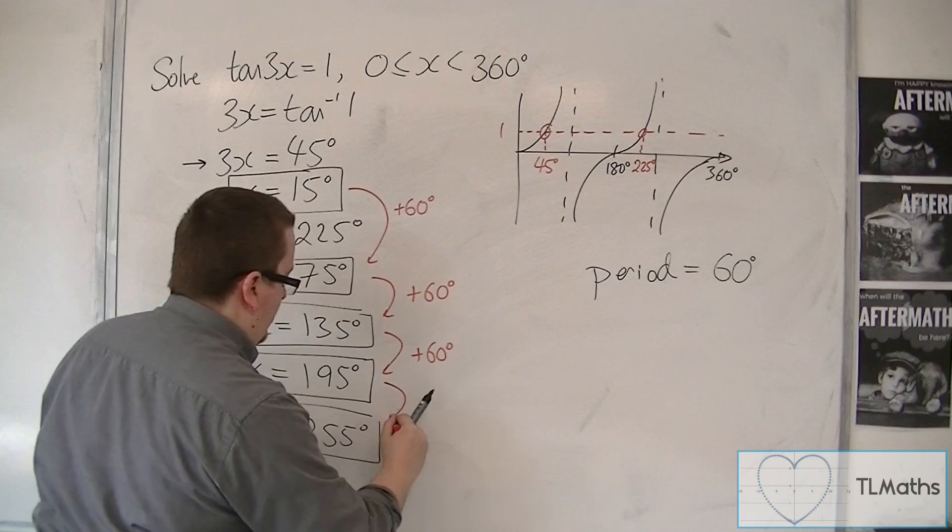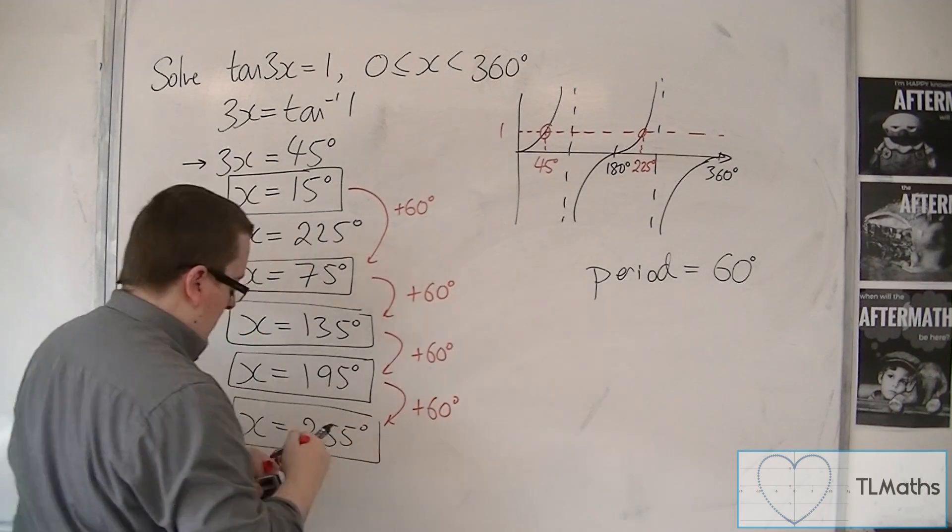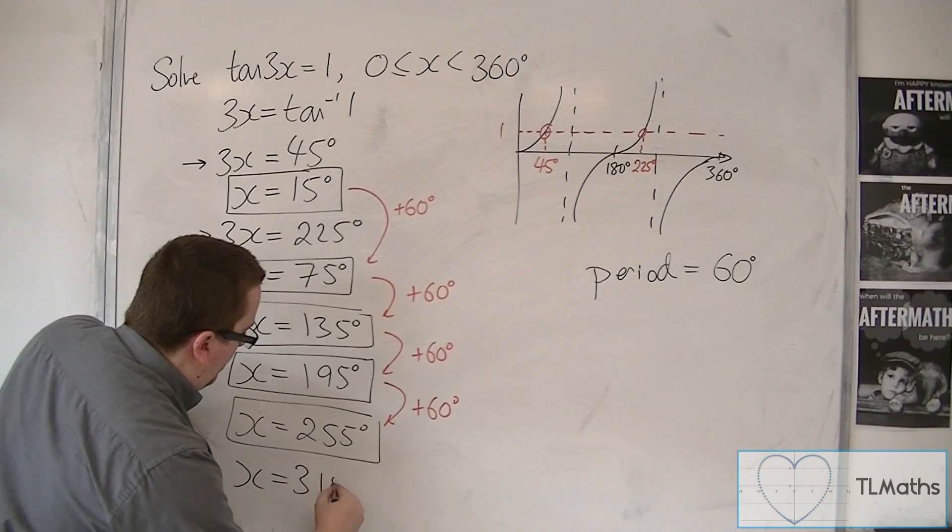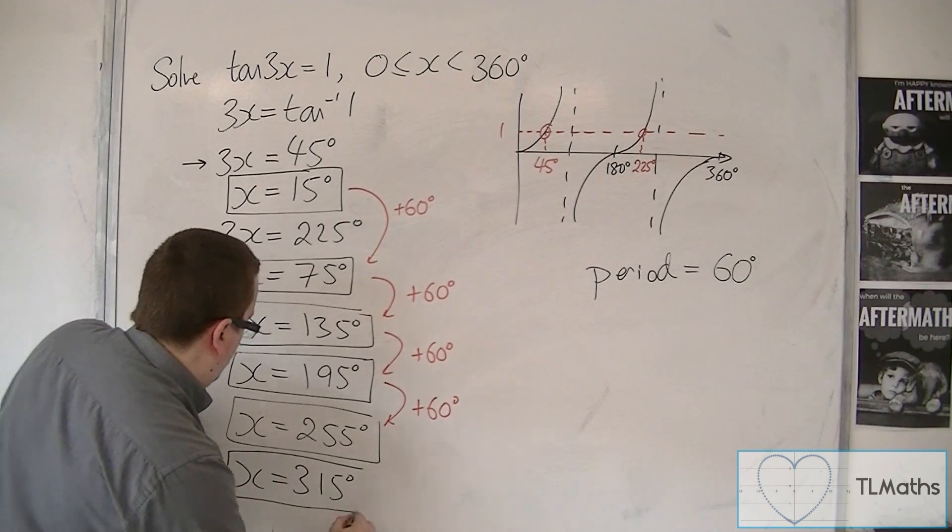So that's another adding 60. And add another 60. And we get to x = 315 degrees.